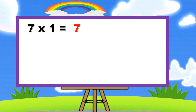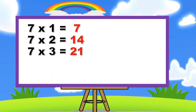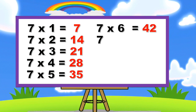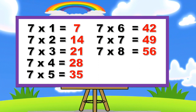Seven ones are seven, seven twos are fourteen, seven threes are twenty-one, seven fours are twenty-eight, seven fives are thirty-five, seven sixes are forty-two, seven sevens are forty-nine, seven eights are fifty-six, seven nines are sixty-three, seven tens are seventy.